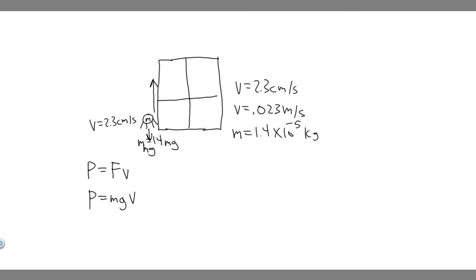So now we've got the correct units, all we have to do is plug in. The power in this case is going to equal the mass, which is 1.4 times 10 to the minus 5, times g, which is 9.8, times the velocity, which is 0.023.